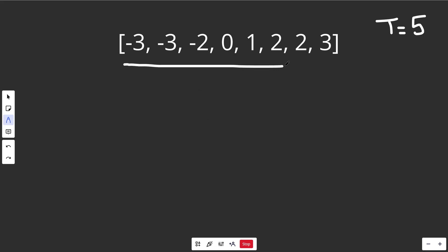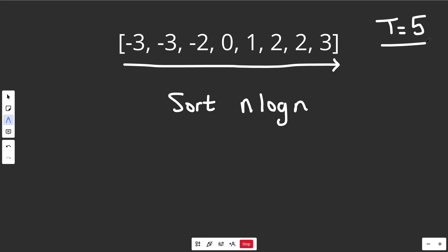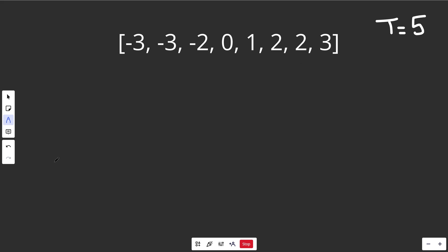Notice that this array is sorted. We're not guaranteed a sorted array, but the first thing we're going to do is sort it in place. That's going to take n log n time, and what we're about to do takes more time than that, so that's okay. Let's say we're searching for a target of 5. We're going to initialize the closest sum — which I'll just call 'closest' — equal to infinity, basically saying we have the furthest away sum possible.